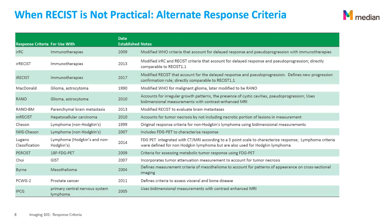This list shows the various other criteria available depending on the type of drug being tested or the type of cancer — for example, iRECIST for immunotherapies, RANO for glioma, and IWG-Chesson for lymphoma.